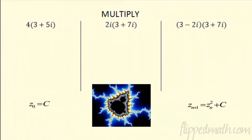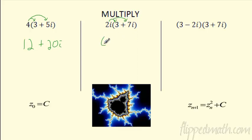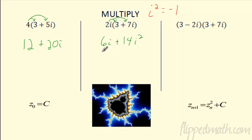Let's multiply — this one gets a little bit trickier, but it's a good one. Can you distribute a real number? Sure, no problem — it's just normal distribution. 4 times 3 is 12, and 4 times 5i is 20i. What if it's an imaginary number? It just follows all the same rules. 2i times 3 is 6i, and 2i times 7i is 14i squared. What's i times i? It's i squared. Remember what i squared is — that was the whole key of the last lesson. i squared actually equals negative 1. So we actually have to replace it now.